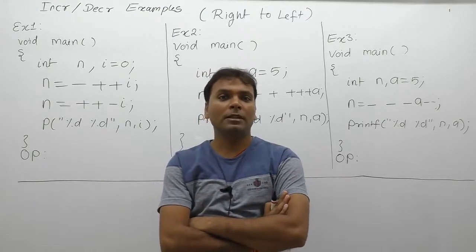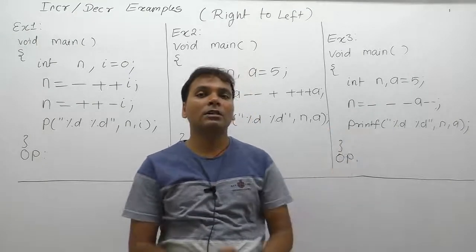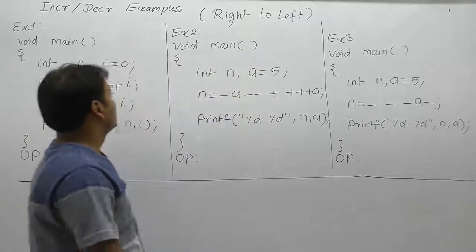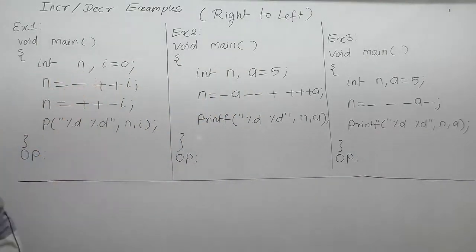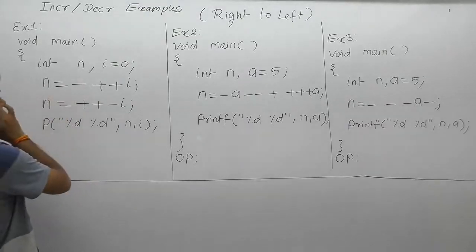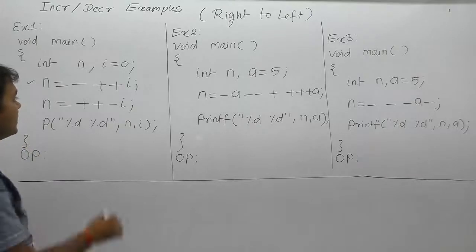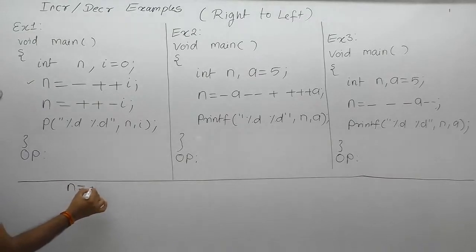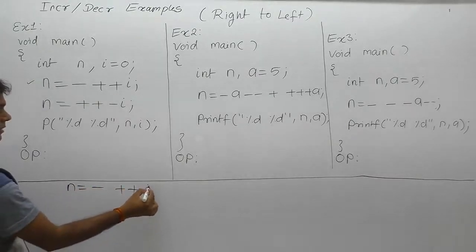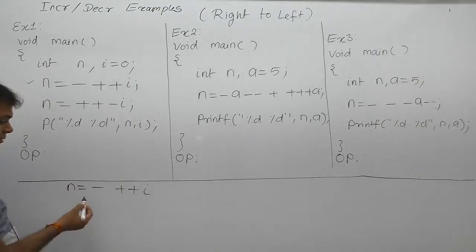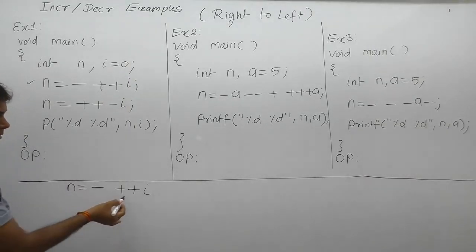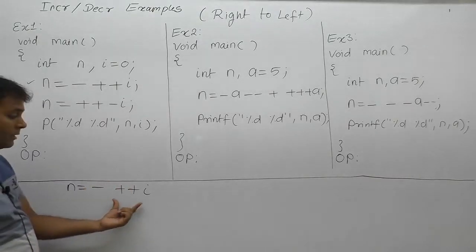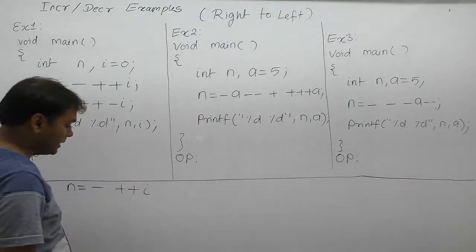In the case of unary operators, unary expressions are solved from right to left based on same priority. Consider the first example: the expression is n = -++i. How many operators are there? There are three operators: assignment, unary minus, and unary plus-plus. Assignment is a binary operator, but minus and plus-plus are unary operators.